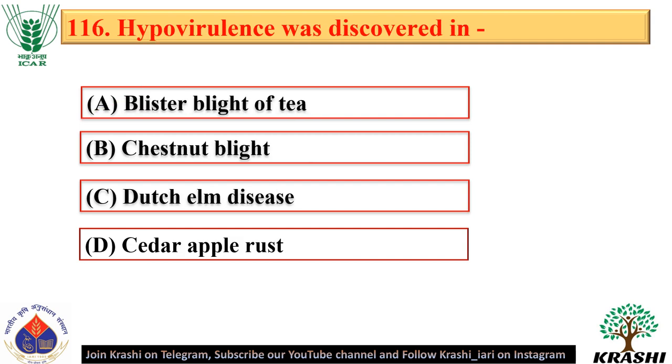Question number 116. Hypovirulence was discovered in chestnut blight — option B.